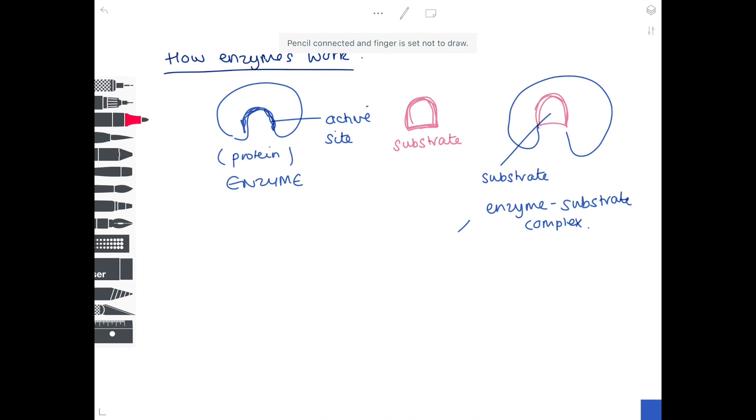Finally, once the enzyme's finished its work, the substrate breaks down to form the product, which could look something like this. So we could have two smaller molecules, for example. And the most important thing to notice here is that that enzyme is unchanged.